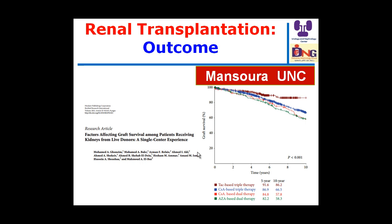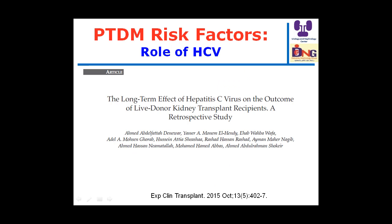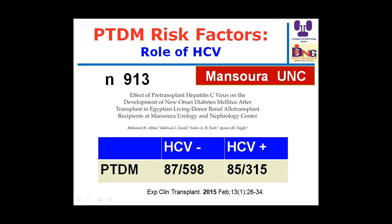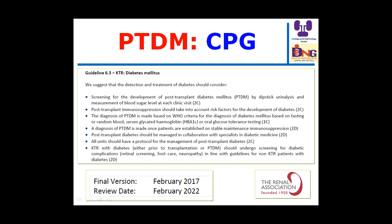We currently depend on tacrolimus but have learned to use it properly. In the early era we used higher doses and diagnosed much more diabetes. We now follow the SYMPHONY trial approach. Regarding hepatitis C, one of our studies found no significant difference between HCV-positive and negative patients over 15 years of follow-up; however, in a larger cohort, hepatitis C was associated with increased risk of post-transplant diabetes.